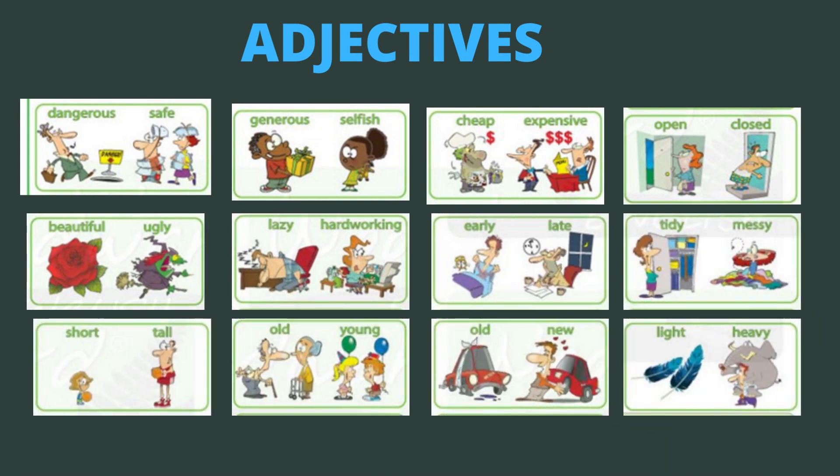So we have here some adjectives and these adjectives are opposites. Estos adjetivos son opuestos. So we have dangerous, que es peligroso, y su opuesto safe, que es seguro. Generous, que es generoso, y selfish, que es egoísta.